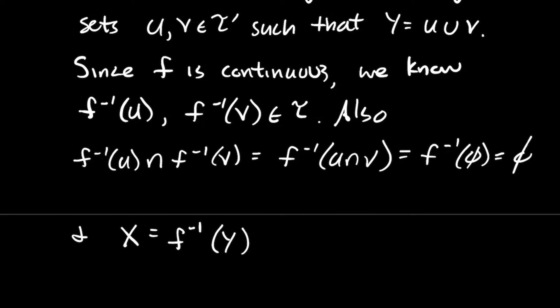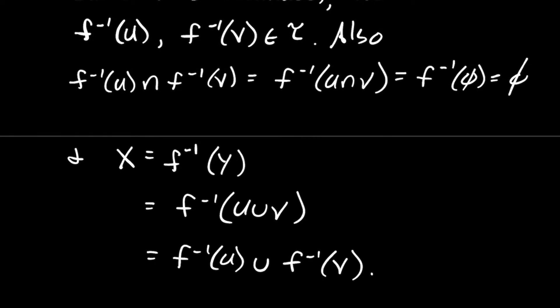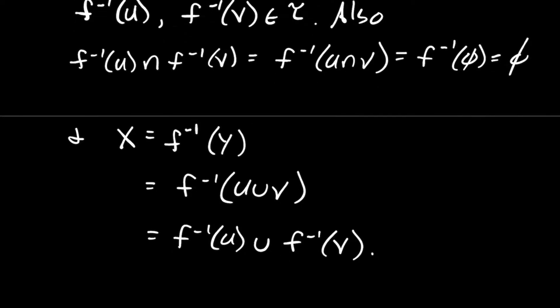And the other thing that I know is that X should be the preimage of the whole codomain Y, but Y is the same thing as U union V. And I know that again, preimages play really nicely with unions, just like they did with intersections. I know the preimage of the union is the same thing as the union of the preimages. And so what does that say? That says that X is the union of these two disjoint open sets.